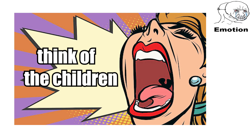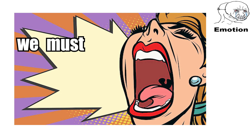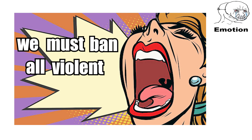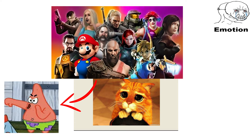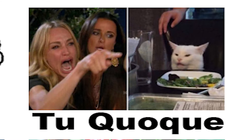Appeal to emotion. An appeal to emotion manipulates an emotional response instead of presenting a logical argument. An example is, think of the children — we must ban all violent video games, which plays on emotions rather than addressing whether video games are bad or not.